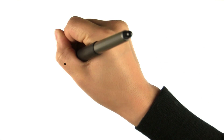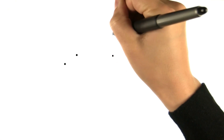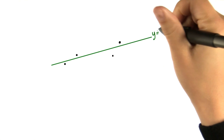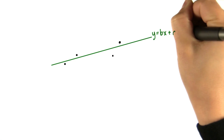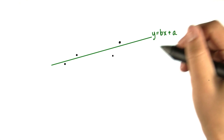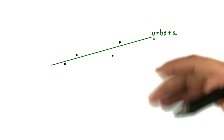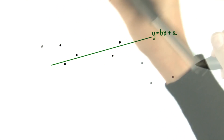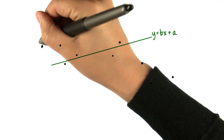For example, let's say we have some sample data that looks like this. We calculate that the regression line is y equals bx plus a — some slope and some intercept. But let's say then that we're able to look at all the population data, and it looks like this. Now it looks to be slightly downward sloping.